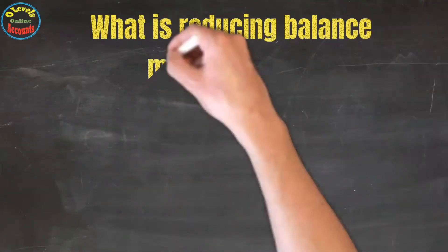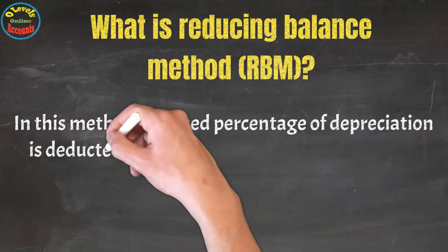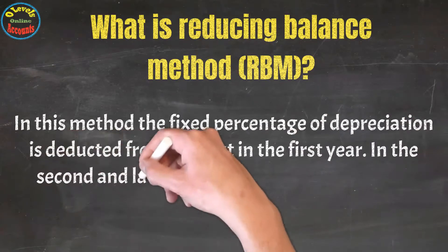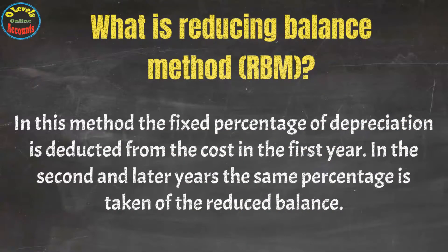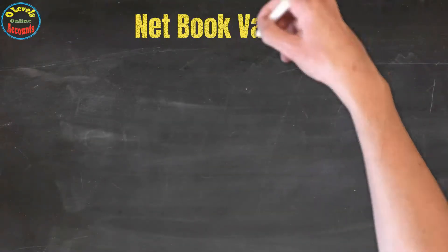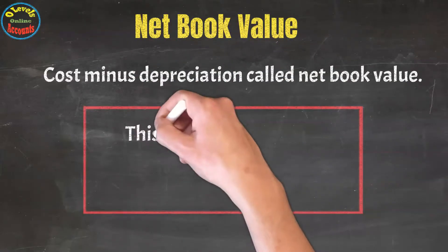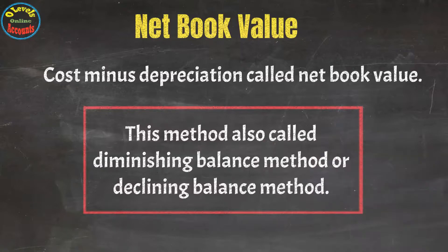In this method, a fixed percentage of depreciation is deducted from the cost in the first year. In the second and later years, the same percentage is taken off the reduced balance. The reduced balance is called cost minus depreciation, known as net book value. This method is also called the diminishing balance method or declining balance method.